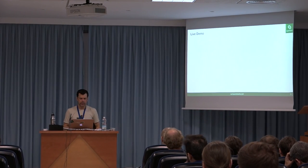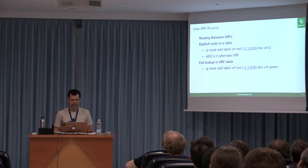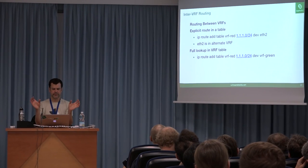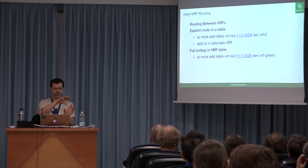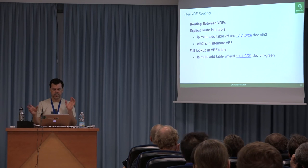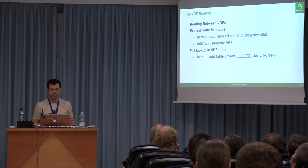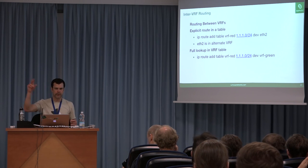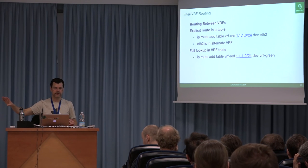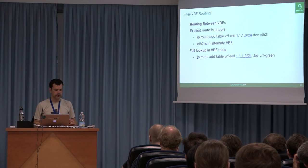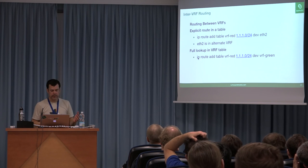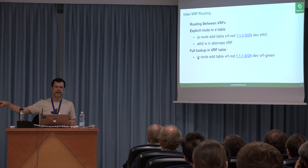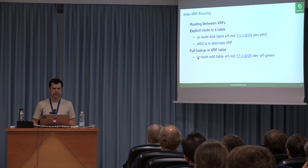Inter-VRF routing: you've got different tables for different VRFs, and there are cases where packets need to go from one VRF to another. There are multiple ways: an explicit route in table VRF red pointing to a network out of ETH2 which is in a different VRF, or a rule saying that in VRF red this network is reachable by VRF green — go to that table and do another lookup to determine where to send the packet.